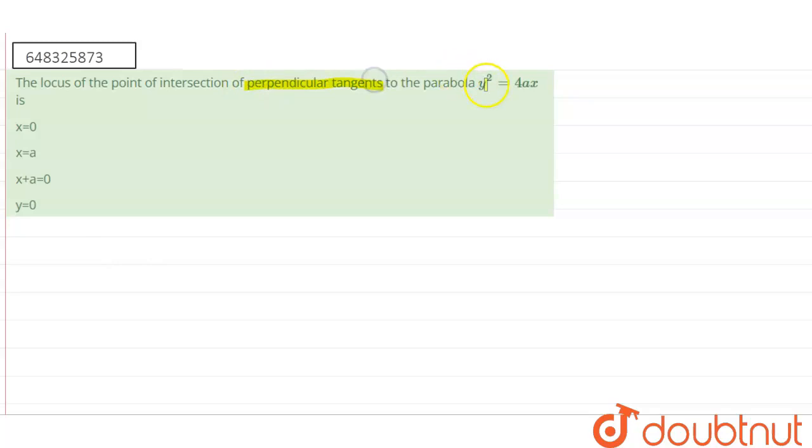to parabola y square equal to 4ax. So we have to find out the locus of point of intersection of perpendicular tangents.